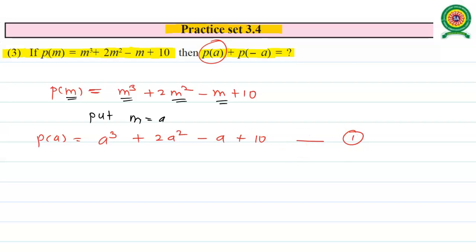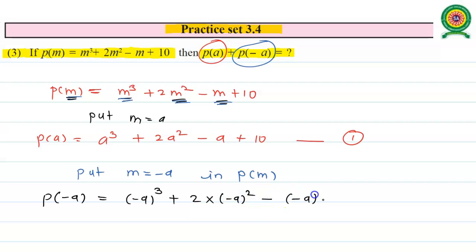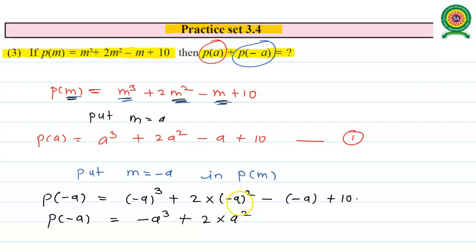Now evaluate P(-a) by putting m equals -a, replacing all m by -a. We get P(-a) equals (-a)³ plus 2(-a)² minus (-a) plus 10. Simplifying: negative to an odd power gives a negative, so we get -a³; negative to an even power gives positive, so 2a²; and minus (-a) becomes plus a; plus 10. Call this equation 2.